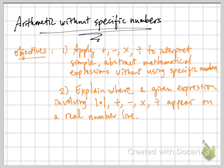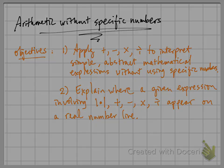To summarize, we talked about applying the four arithmetic operations to interpret simple abstract mathematical expressions without actually using any specific numbers. And we also explained with some examples how a given mathematical expressions involving absolute value and the four arithmetic operations appear on the real number line.